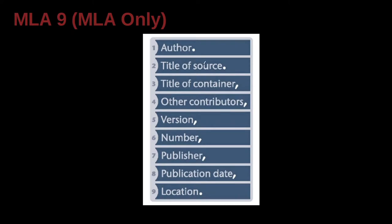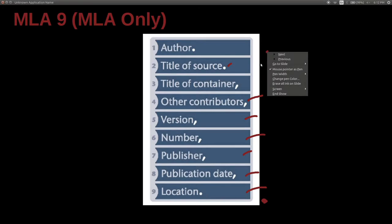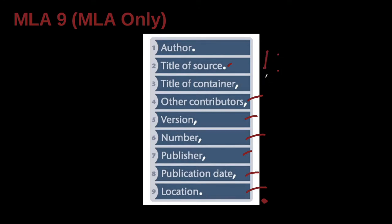The general rules are: author, then a period; title of the source, then a period. That source may be inside a container, such as a journal article inside a journal, or a chapter inside a book. After the period comes the container name followed by a comma. If there are other contributors, a version number, a publisher, or other details, you separate those with commas, ending with the date and possibly the location, then a final period.